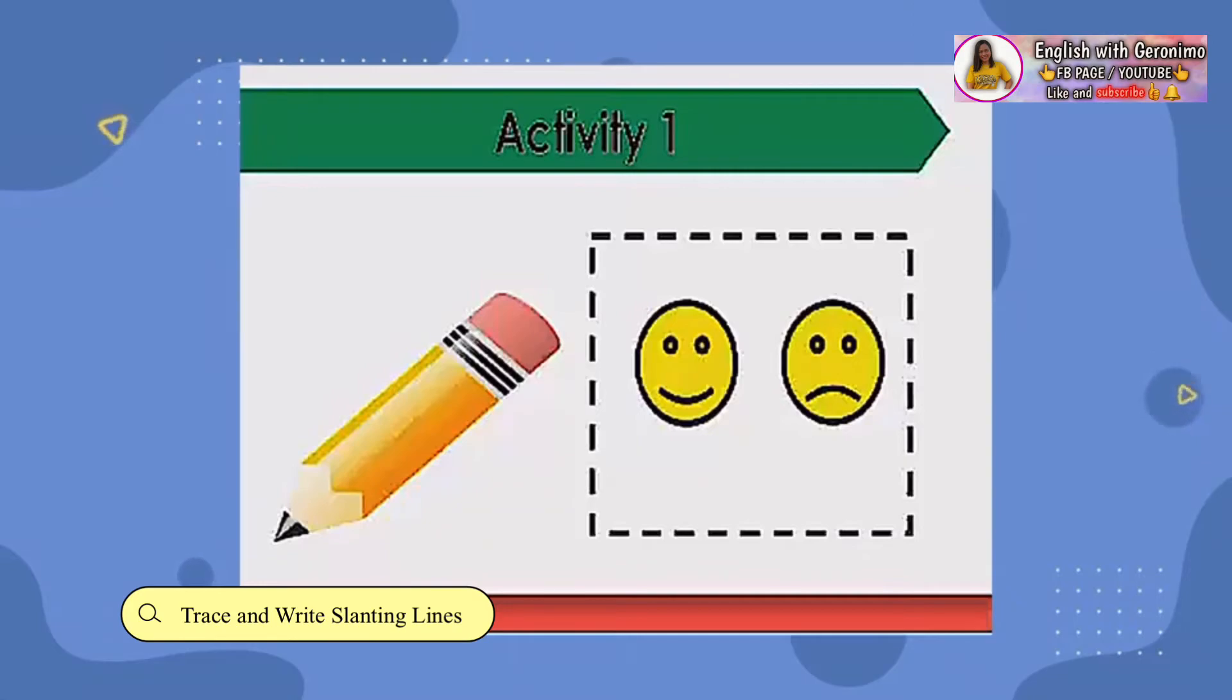And number 5. Is the object showing slanting line or not? You're correct! The pencil shows a slanting line.